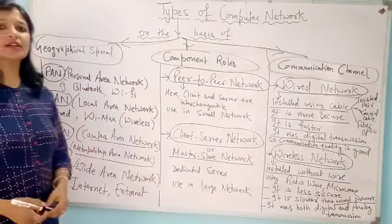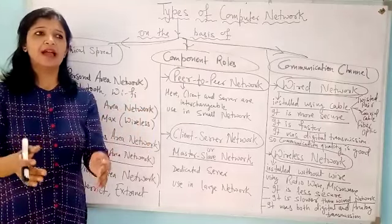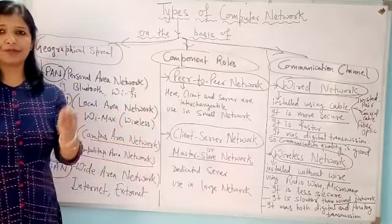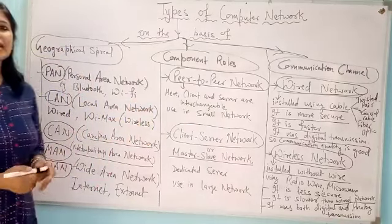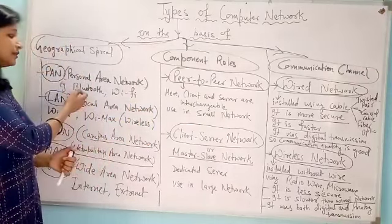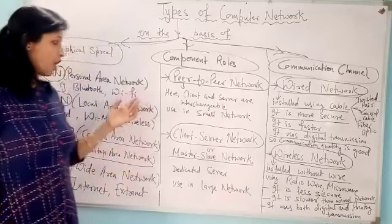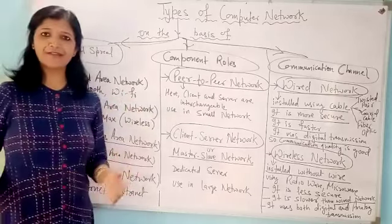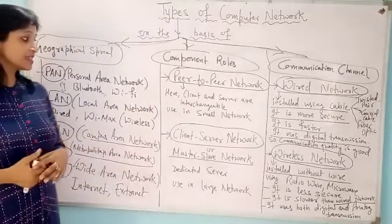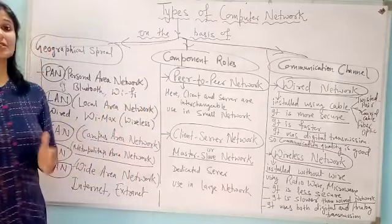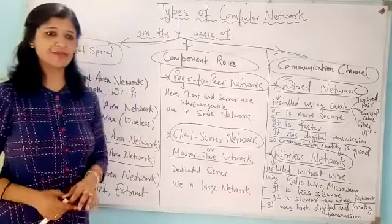Personal area networks are networks confined to a very small area, mostly up to 3 to 5 meters. Examples include sharing of data using a Bluetooth device or a Wi-Fi network created at home using a Wi-Fi router. As it is for personal usage, that's why it is termed as personal area network.